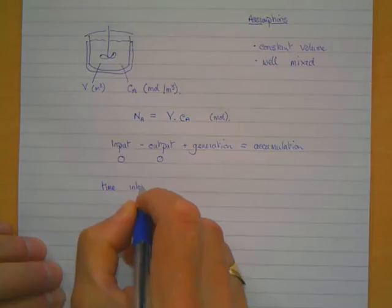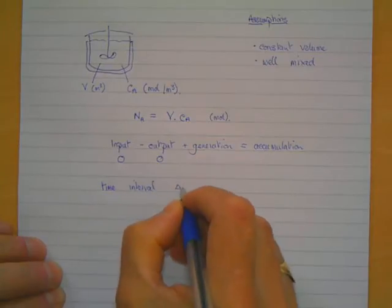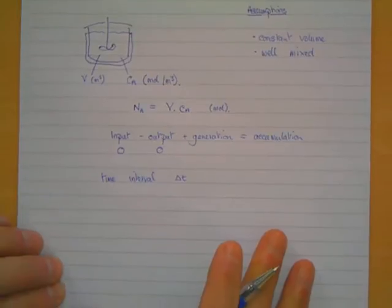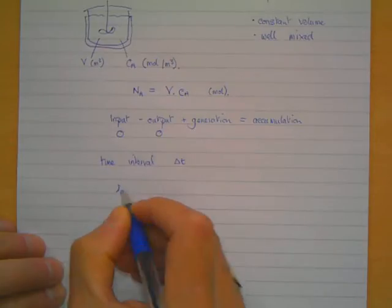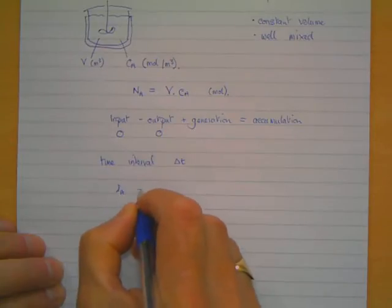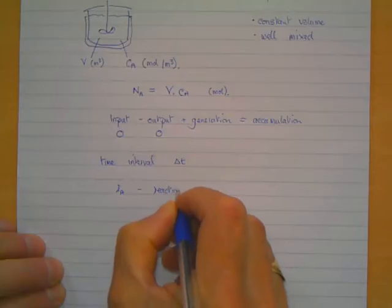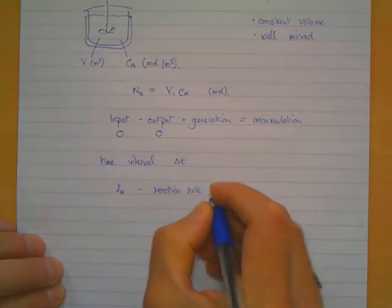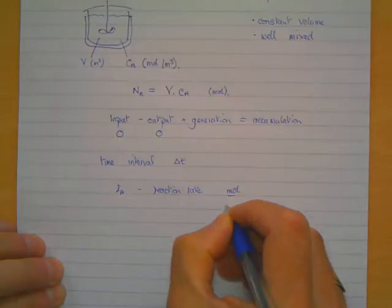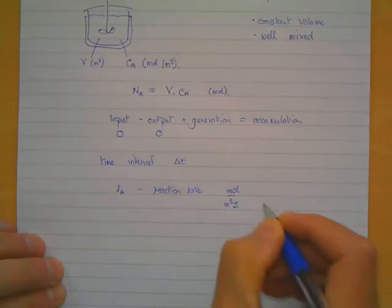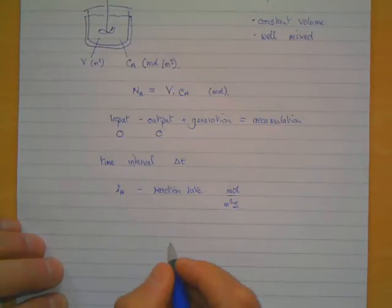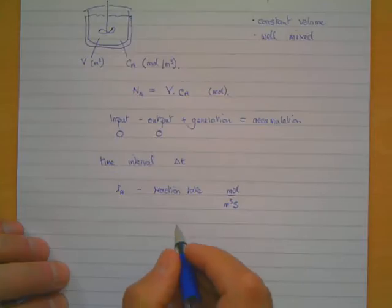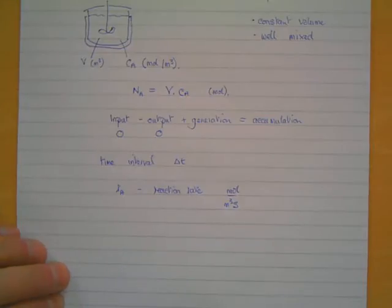So if we consider a time interval delta t during the reaction, we're going to define another variable here which is rA, which is the reaction rate, and that's expressed in moles per cubic meter per second. That's the rate of generation or consumption of component A. In this case component A is our starting material and as the reaction proceeds it will be consumed, so actually rA will have a negative value.